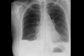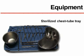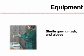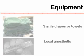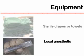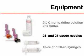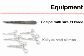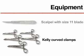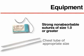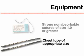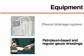A chest x-ray should be performed when possible prior to the chest tube insertion. Sterilized and fully prepared chest tube trays are often available in the hospital. Key materials required include a sterile gown, mask, and gloves; sterile drapes or towels; local anesthetics such as 1% lidocaine; chlorhexidine cleaning solution and sterile gauze; 25 and 21 gauge needles; 10cc and 20cc syringes; a scalpel with size 11 blade; at least 4 or 5 dissecting instruments such as Kelly curved clamps or artery forceps; non-absorbable strong sutures of size 1.0 or greater made of silk or nylon; a chest tube of appropriate size; a sterile drainage system; and dressings for the tube after insertion.